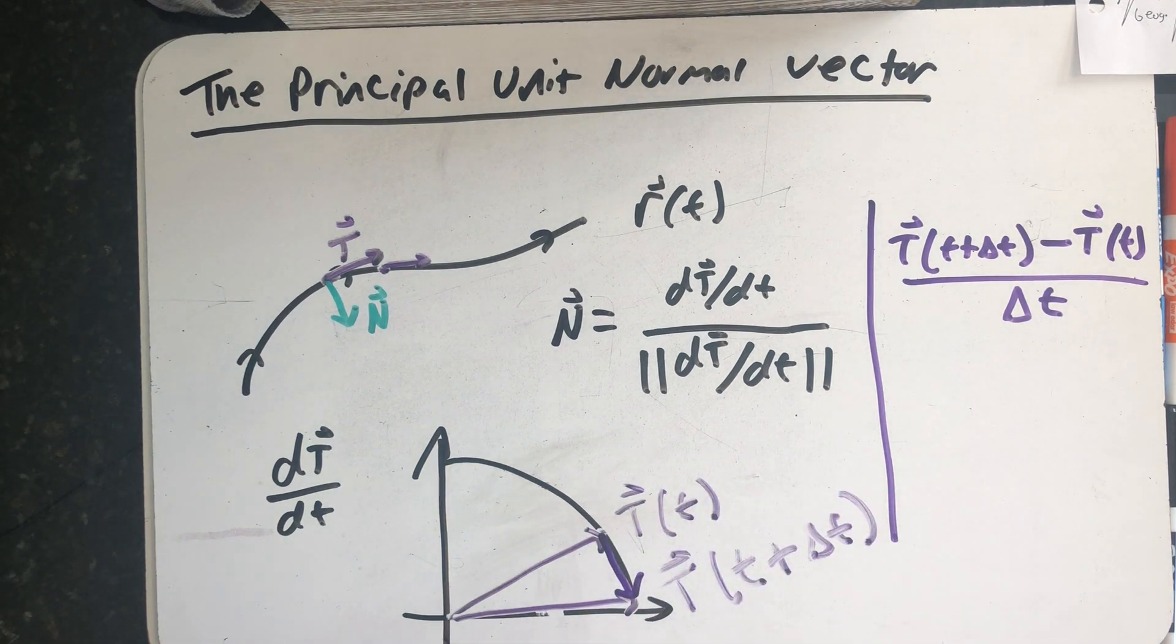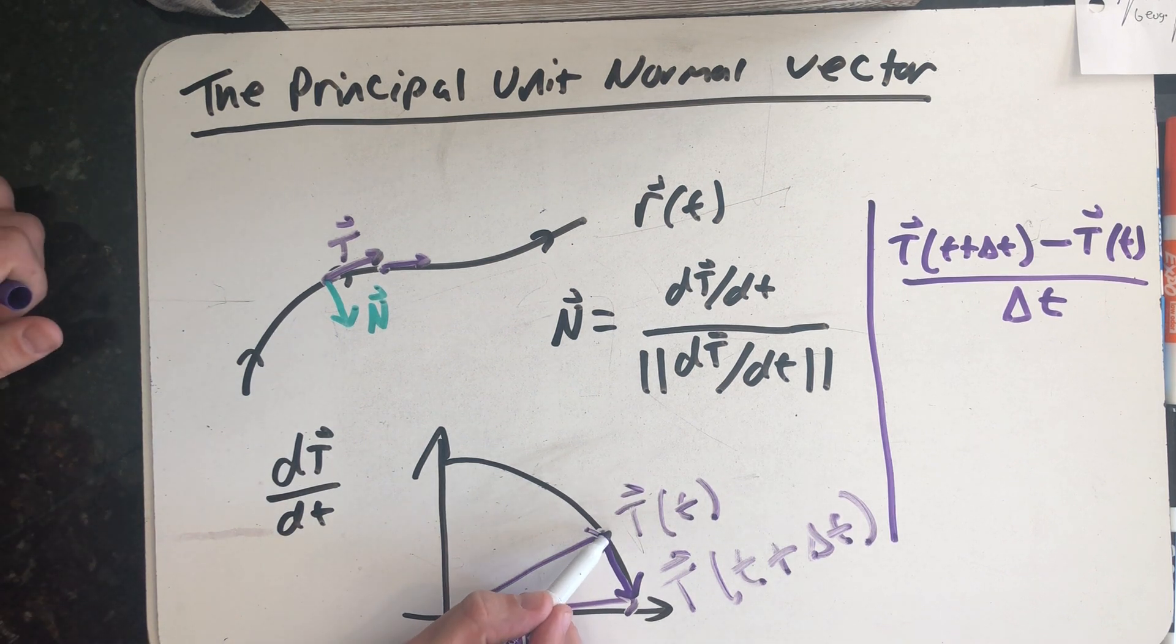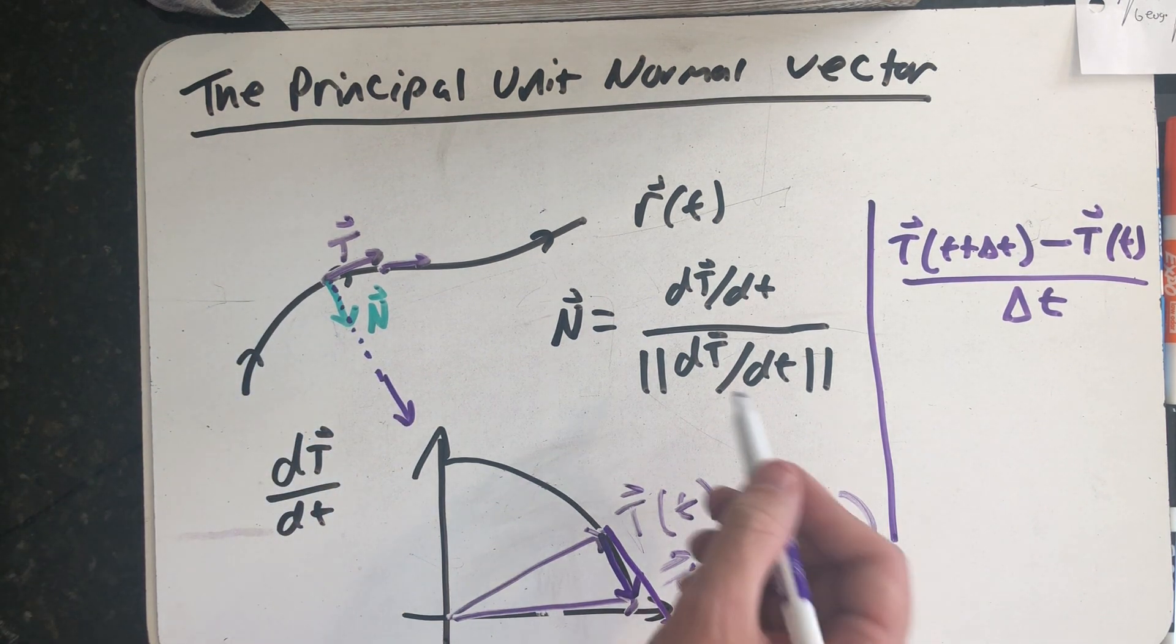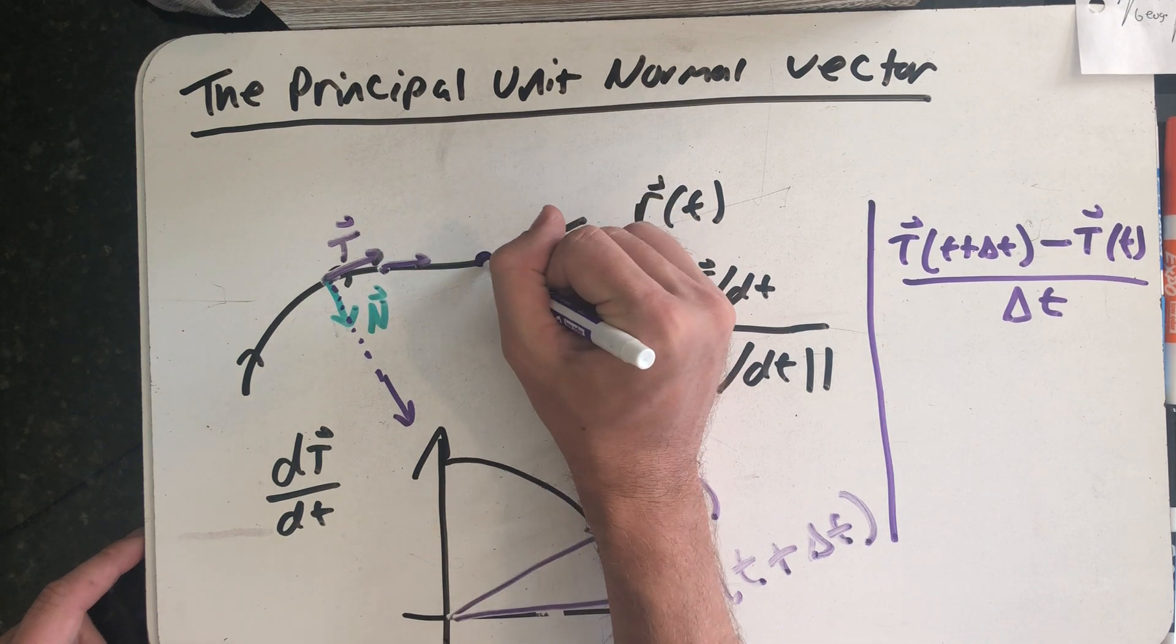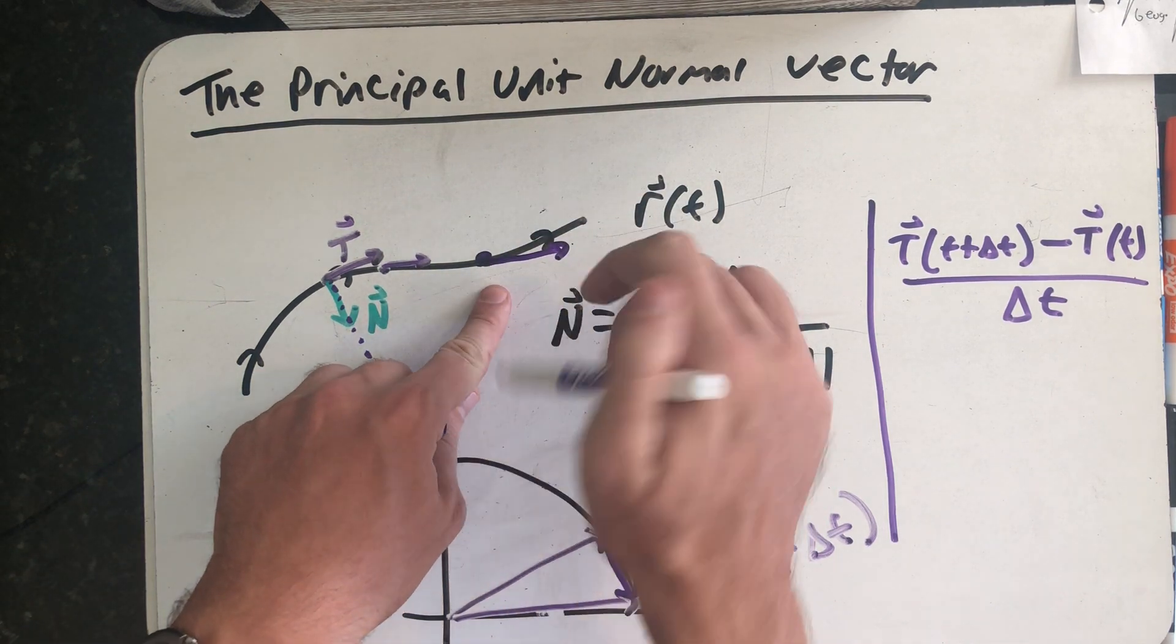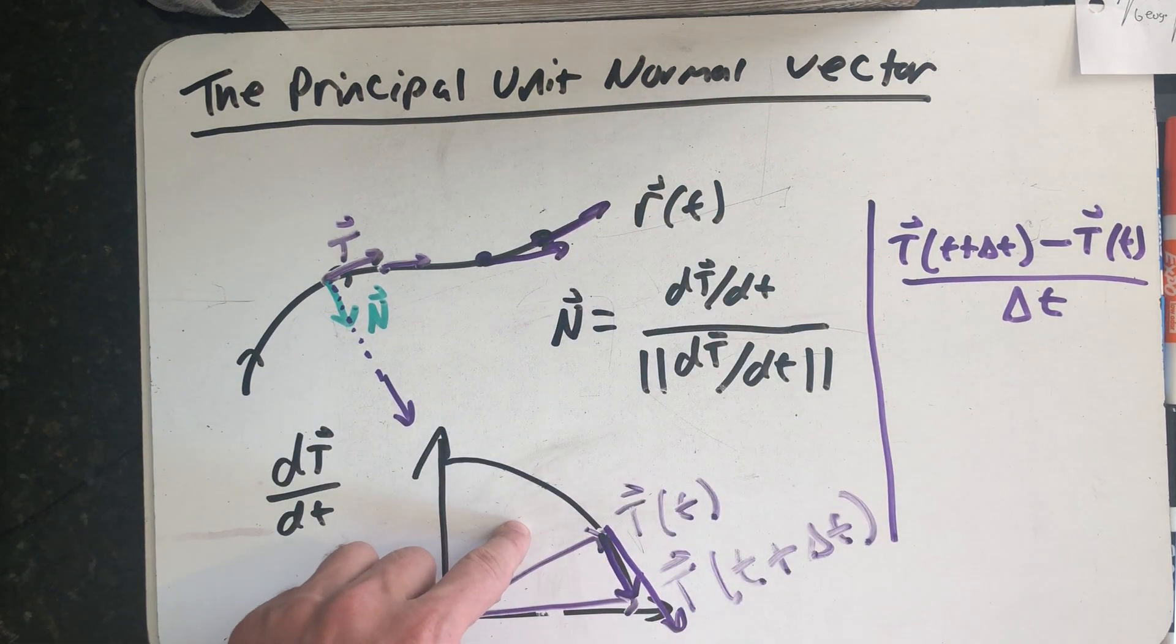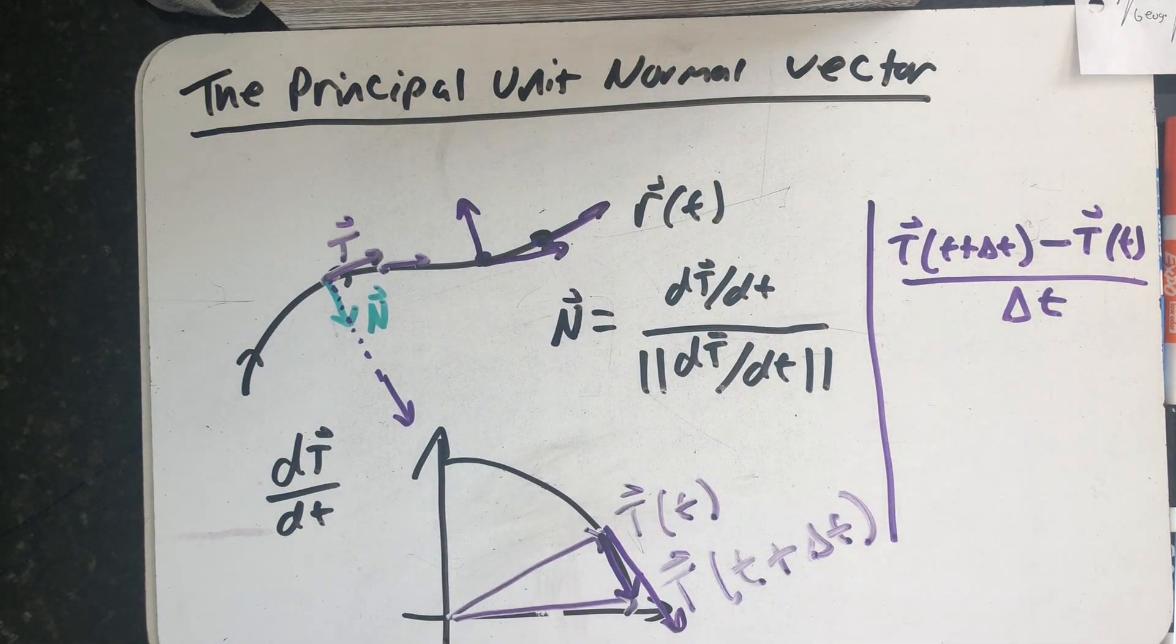And now I think about taking the limit as delta t goes to zero to get this one. And this vector would point tangent to my unit circle inward to this curve. Dividing it by its own length makes it a unit vector. So now imagine that I am at a point that curves the other direction. My unit vector goes from pointing somewhere like this to pointing somewhere like that. The subtraction would be reversed. And now my unit normal vector is going to point inwards to that curve.